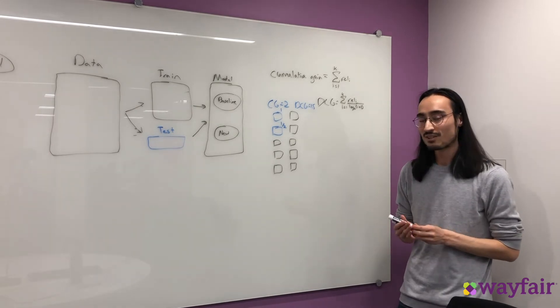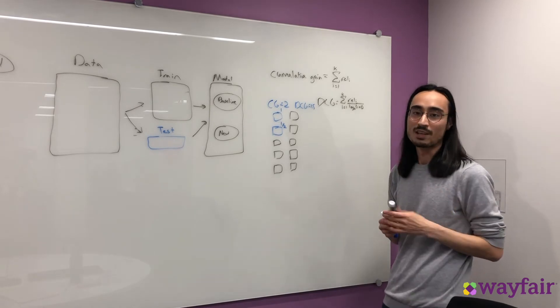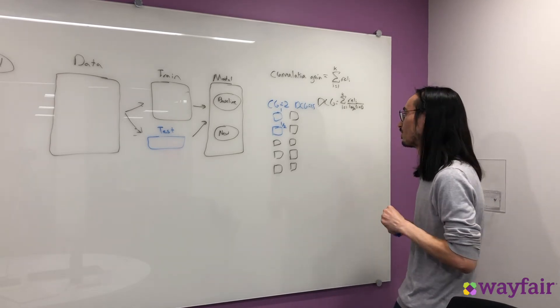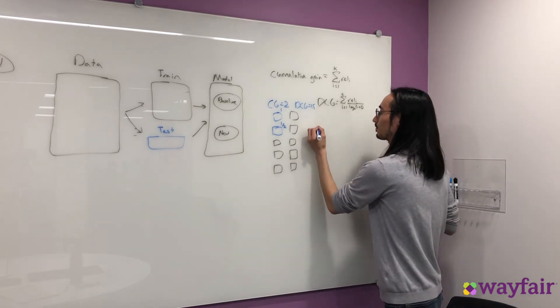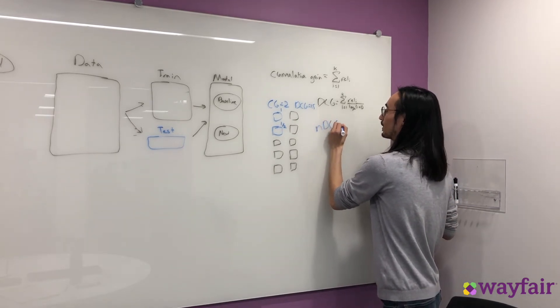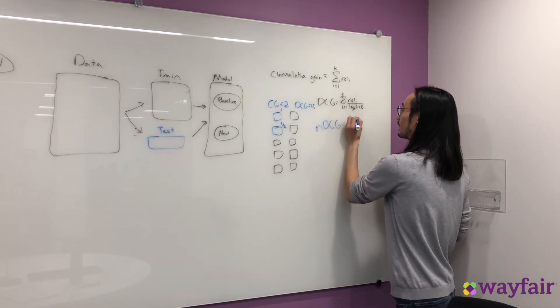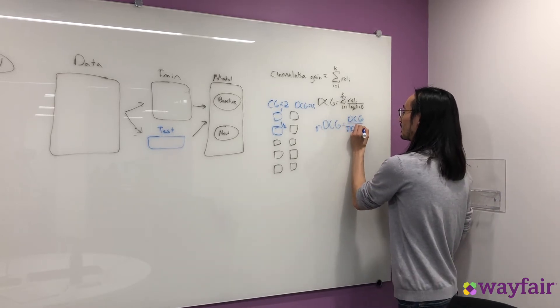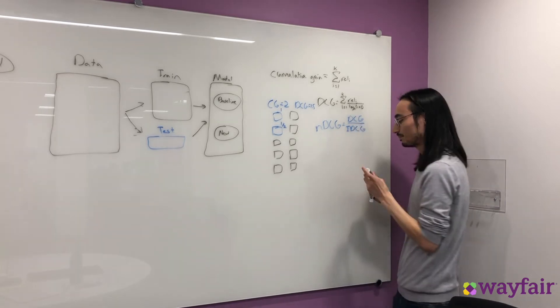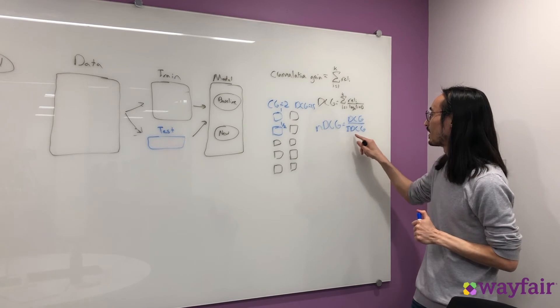Another common extension of discounted cumulative gain is something called normalized discounted cumulative gain. So to get NDCG, all you do is take the DCG score and divide it by something called the idealized discounted cumulative gain.